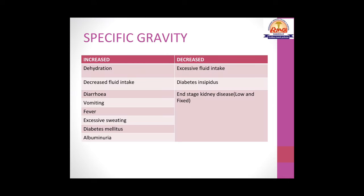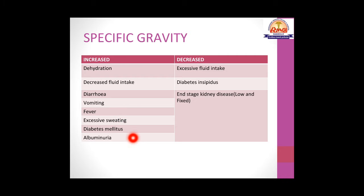Increased specific gravity is seen in dehydration, decreased fluid intake, diarrhea, vomiting, fever, excessive sweating, diabetes mellitus, and albuminuria — also termed hypersthenuria. Decreased specific gravity is seen with excessive fluid intake, diabetes insipidus, and end-stage kidney disease.